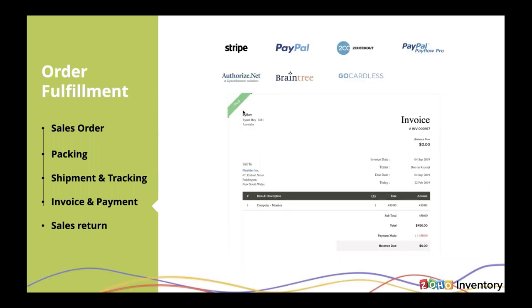The next point would be collecting payment from your customer. Once the package has been delivered, the next process is to collect payments. Using Zoho Inventory, you can create beautiful invoices and integrate with any of these payment gateways like Stripe, PayPal, or 2Checkout, and automate the collection process. For example, with PayPal integrated, a link will be sent out with the invoice, wherein the customer can simply click and pay you online, which helps enhance the customer experience.